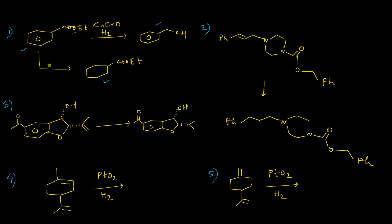If you want to hydrogenate the aromatic system instead, then you can choose either palladium, platinum, or nickel catalyst. This reaction can be done by Raney nickel in the presence of hydrogen gas. Two different catalysts can thus perform selective hydrogenation reactions on the same starting material.